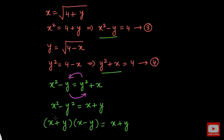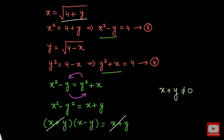As you can see on both sides, we can cancel out (x plus y). Some might ask whether we can cancel like that — we might miss solutions, and what if x plus y equals 0? But here x plus y is not equal to 0. Because x is the square root of (4 plus y), which is definitely greater than 0 — it's a positive number. Similarly, y equals square root of (4 minus x), so y is also positive. The sum of two positive numbers is always greater than 0, so we can safely cancel x plus y on both sides.